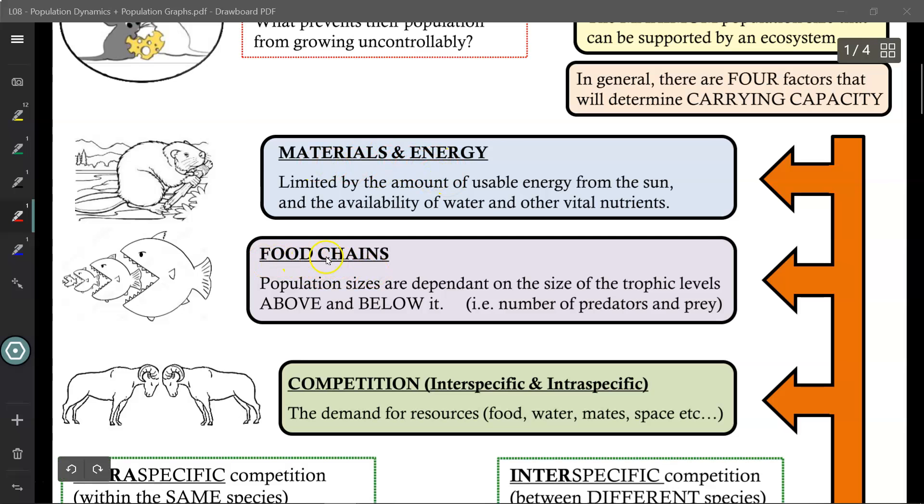Food chains is the next factor. Population sizes are dependent on the size of the trophic levels above and below it. So looking at this fish in the middle as an example, if there's a large number of predators, then its population will be decreased. And vice versa, if there's not a lot of creatures trying to eat it, its population will increase. But the same goes for the trophic level below it. If there's a lot of food for it to eat, its population will increase. But if there's not a lot of food for it to eat, its population will decrease. So food chains is another factor that affects carrying capacity.